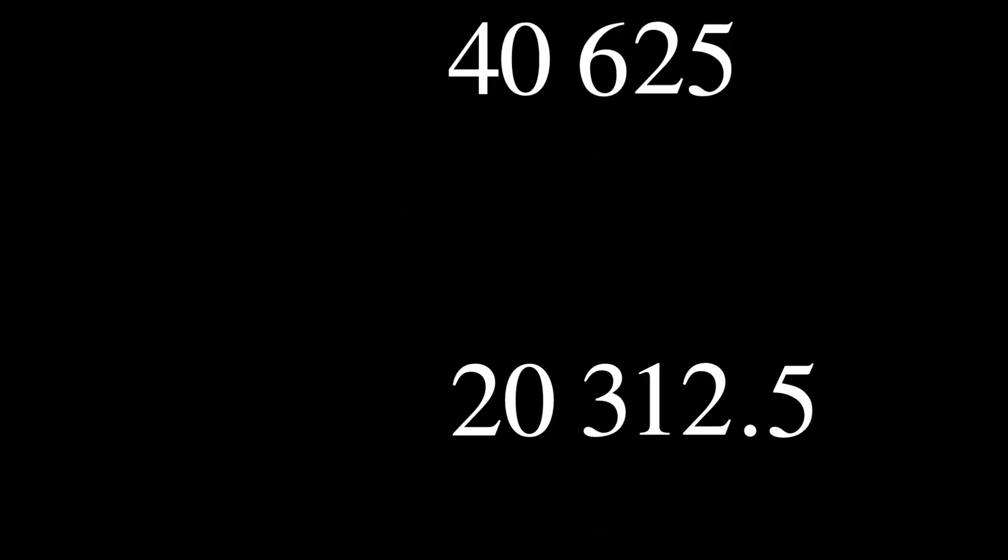The idea that endlessly dividing a number results in zero can intuitively make sense, because as you divide a number into smaller and smaller parts, each part becomes increasingly tiny, seemingly approaching zero. And that's why equations like 1 over 0 equals infinity and 1 over infinity equals zero still exist in older textbooks.